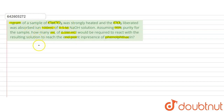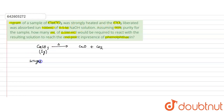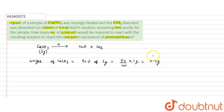When calcium carbonate is strongly heated, it forms calcium oxide and carbon dioxide. The weight of calcium carbonate given is 1 gram, and its percent purity is 90%, so the actual weight of calcium carbonate present will be 90% of 1 gram, which equals 90/100 × 1 gram = 0.9 grams.